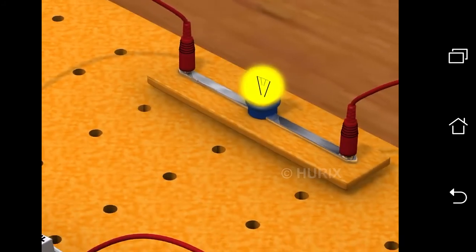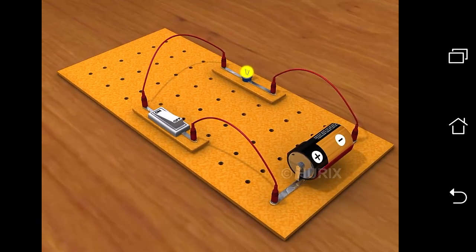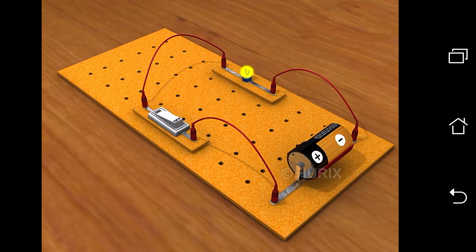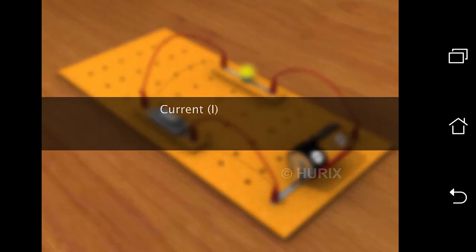Let's actually measure the resistance of a bulb filament to understand how resistance is calculated. Find the resistance offered by the filament of a bulb whose current is measured as 4 amperes. An electric cell connected to this bulb has a potential difference of 12 volts.